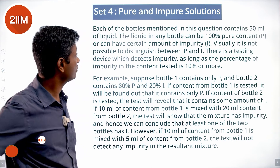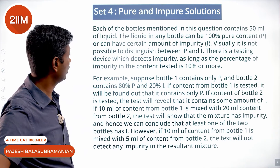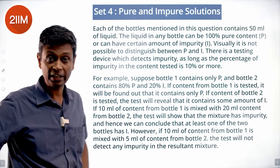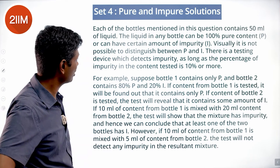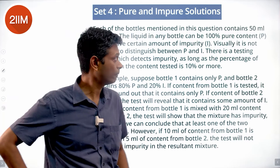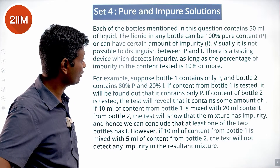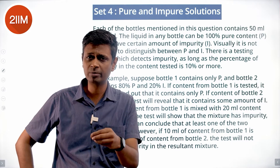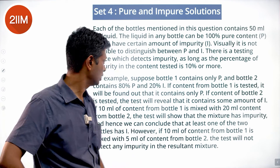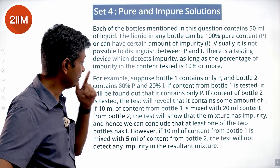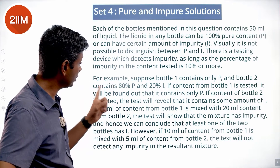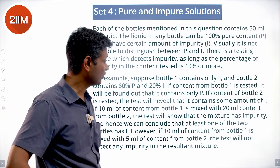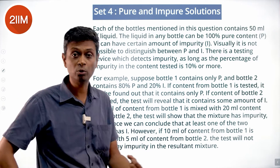Each of the bottles mentioned in this question contains 50ml of liquid. The liquid in any bottle can be 100% pure content P, or can have some amount of impurity I. Visually it is not possible to distinguish between P and I. There's a testing device which detects impurity as long as the percentage impurity in the content tested is 10% or more. For example, bottle 1 contains only P and bottle 2 contains 80% P and 20% I. If content of bottle 1 is tested it will be found to contain only P; if content of bottle 2 is tested it will reveal some amount of I.